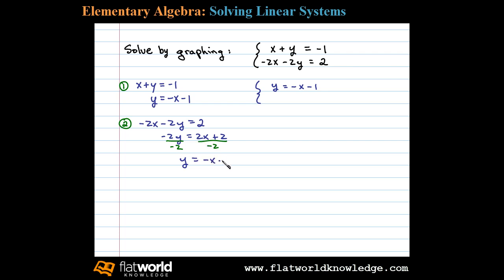Notice here in slope-intercept form we can see that the lines are actually the same. When the lines are the same in a system, that indicates the system is dependent. Let's graph these.